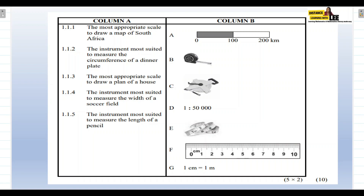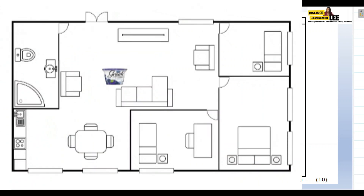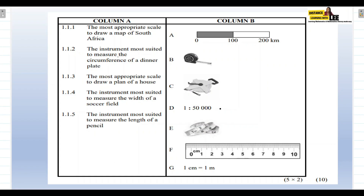To recap: 1.1.1 is D — the number scale for drawing a map of South Africa. 1.1.2 is E — the cloth tape for measuring the circumference of a dinner plate, as it's the most practical option for wrapping around a curved surface. For 1.1.3 — the most appropriate scale to draw a plan of a house — the answer is G, which is one centimeter equals one meter, because when drawing a house plan you work with centimeters and meters, not kilometers.